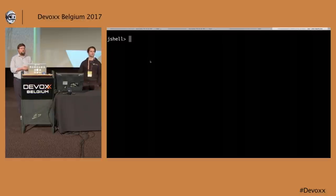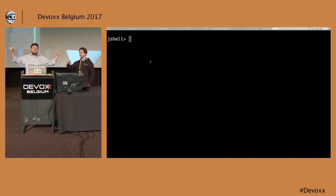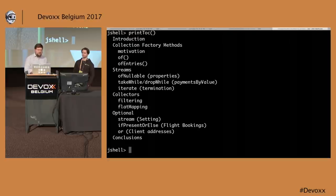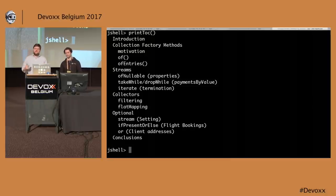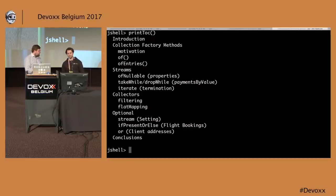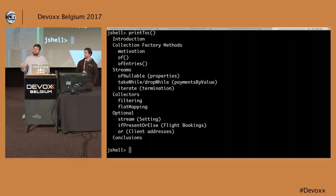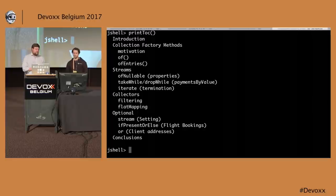There are no slides in this talk — just a black and white terminal, 2017-style. So, the table of contents: we're going to talk about collection factory methods, some verbosity-reducing library changes, then streams improvements in Java 9, improvements to the Collectors API, and then Optional. Finally we'll wrap up the different things we've seen.